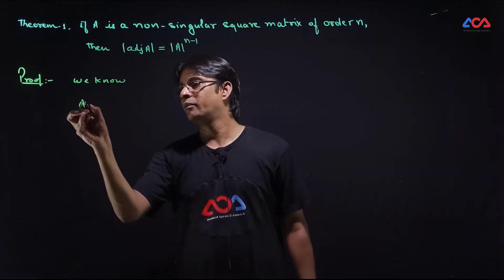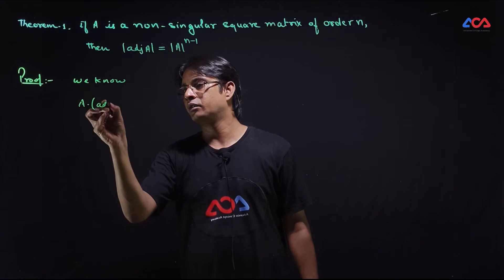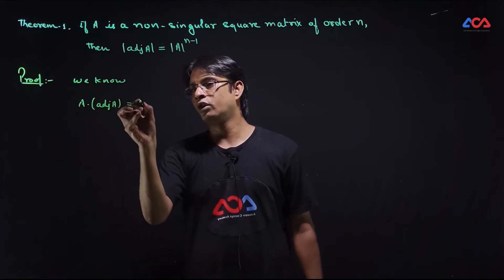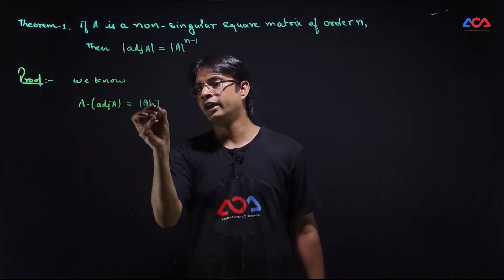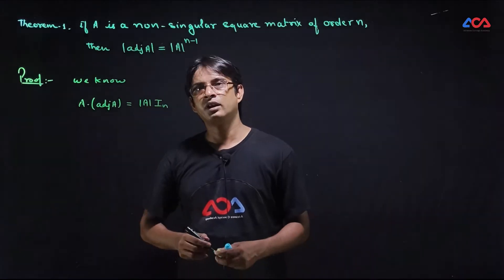In the previous lecture we discussed A into adjoint of A, which is equal to determinant of A into identity matrix of order n.